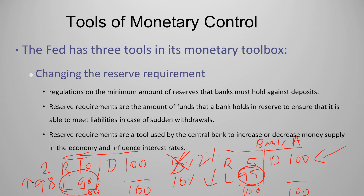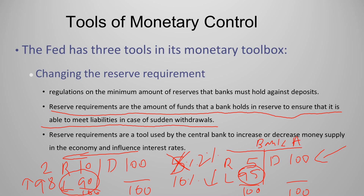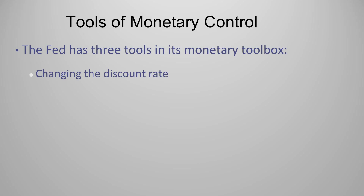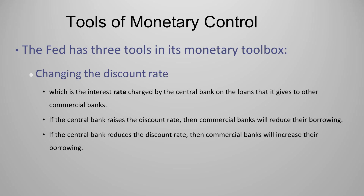That's the general idea. Reserve requirements are the amount of funds that a bank holds in reserve to ensure it is able to meet liabilities in case of sudden withdrawals. This is the second method by which the central bank can increase or decrease money supply in an economy. The third and final method available to the central bank is changing the discount rate — the interest rate charged by the central bank on the loans it gives to other commercial banks. If the central bank raises the discount rate, commercial banks will reduce their borrowing; if it reduces the discount rate, commercial banks will increase their borrowing.